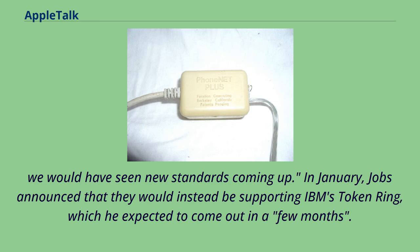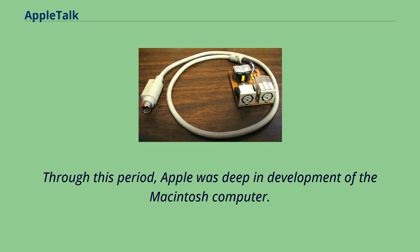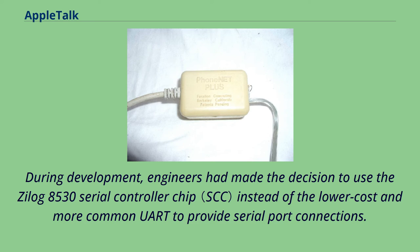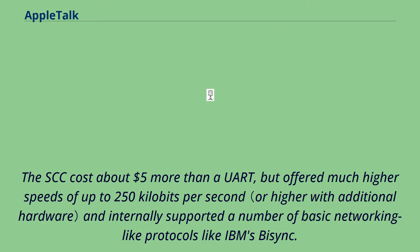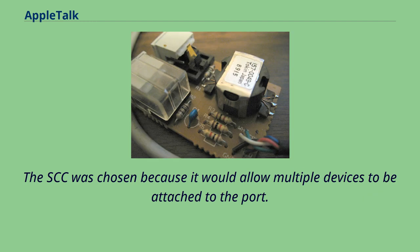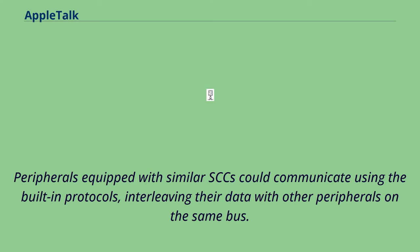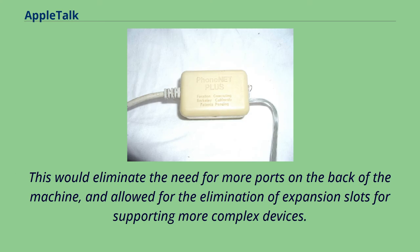Through this period, Apple was deep in development of the Macintosh computer. During development, engineers had made the decision to use the Zilog 8530 serial controller chip instead of the lower cost and more common UART to provide serial port connections. The SCC cost about $5 more than a UART, but offered much higher speeds of up to 250 kbps and internally supported a number of basic networking-like protocols. The SCC was chosen because it would allow multiple devices to be attached to the port, interleaving their data with other peripherals on the same bus, eliminating the need for more ports and expansion slots.